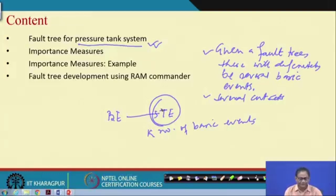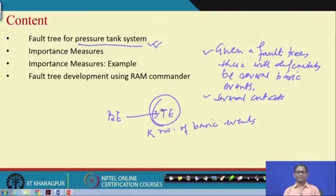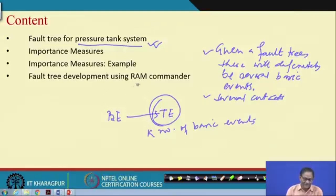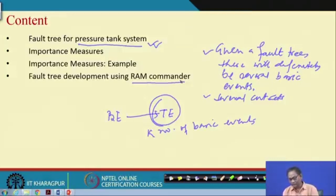The importance measures, as well as fault tree development itself, are manually cumbersome. When you have a system that is sufficiently large, you must rely on software for developing the fault tree. RAM Commander is one software which basically helps in developing a fault tree and analyzing it — finding out the top event probability given the bottom event probability, finding out the importance measure, and finding out cut sets.